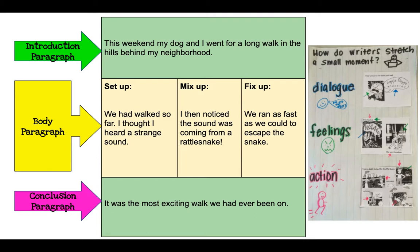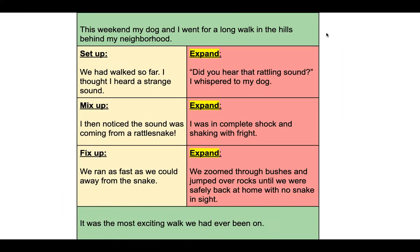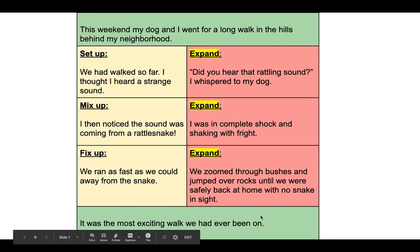So my friend — the student — went back and started writing, expanding and creating one to two more details on the setup, the mix-up, and the fix-up. Here's what they came up with. Let's read it: 'This weekend my dog and I went for a long walk in the hills behind my neighborhood. We'd walked so far I thought I heard a strange sound.' Look at how they expanded — look at the next sentence: 'Did you hear that rattling sound?' I whispered to my dog. 'I then noticed the sound was coming from a rattlesnake.' Here's how they expanded: 'I was in complete shock and shaking with fright.' And finally, look at the fix-up: 'We ran as fast as we could away from the snake. We zoomed through the bushes and jumped over rocks until we were safely back at home with no snake in sight.' 'It was the most exciting walk we had ever been on.'